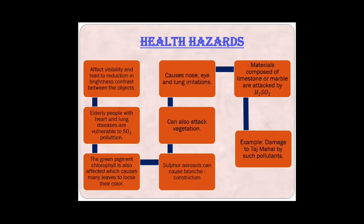It causes nose, eyes, and lung irritation. Materials composed of limestone and marble are attacked by the secondary pollutants. The best example is the damage to the Taj Mahal by such pollutants — the appearance of the Taj Mahal has deteriorated because of exposure to secondary pollutants in the atmosphere. This is in a nutshell about the health hazards and other damages caused by the primary and secondary pollutants of oxides of sulfur.